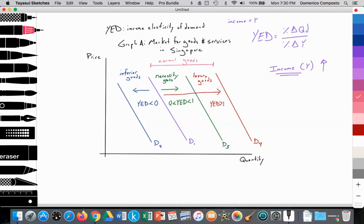So let's go ahead and analyze this as we would for a paper exam for the IB. As can be seen, we have graph A, which is the market for goods and services in Singapore. We're measuring quantity on the x-axis and price on the y-axis. And we're going to assume that income in Singapore is rising.